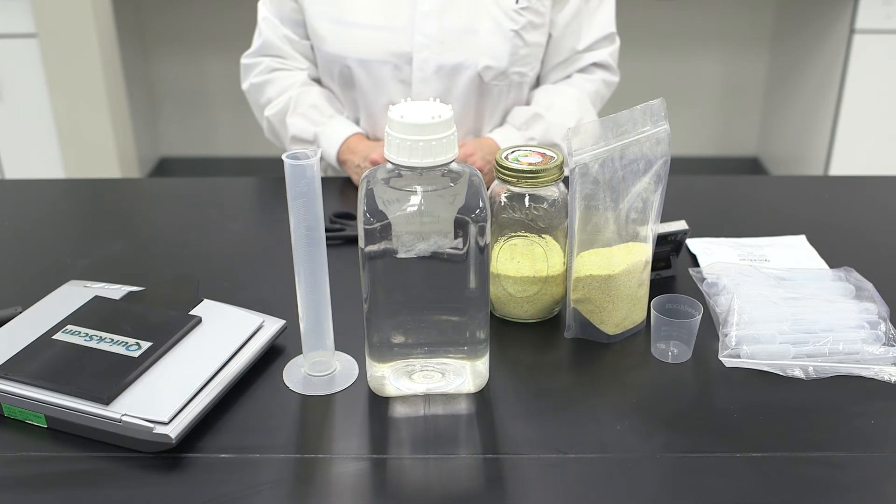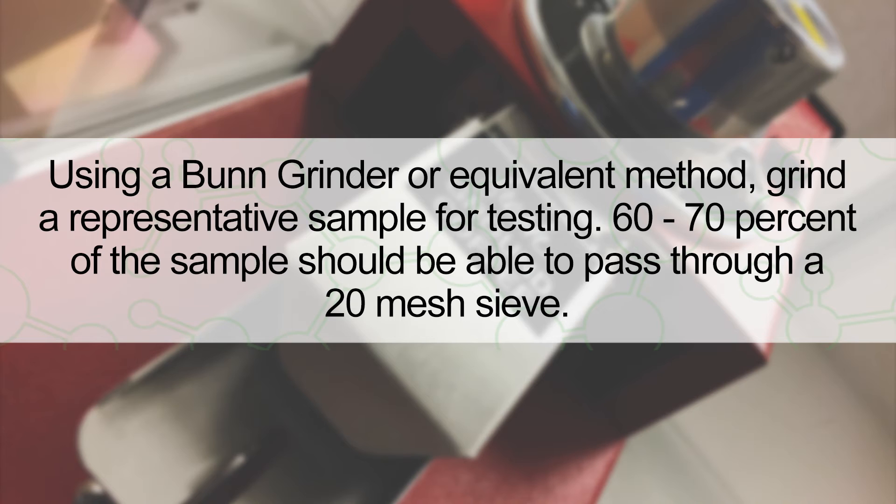Allow your test kit to come to room temperature. Using a bun grinder or an equivalent method, grind a representative sample for testing. 60 to 70 percent of the sample should be able to pass through a 20 mesh sieve.